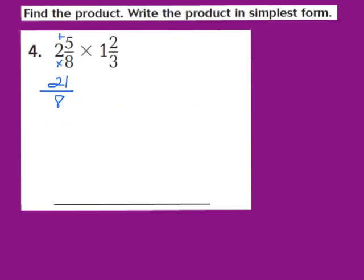Now I'll do the same with 1 and 2 thirds. I multiply the denominator 3 times the whole number 1: 3 times 1 is 3. Then I add the numerator 2, so 3 plus 2 gives me 5. My numerator is 5, and the denominator stays the same, making it 5 thirds. So my improper fractions are now 21 eighths times 5 thirds.